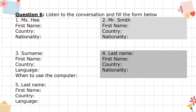Five. Good afternoon. Can I help you? Good afternoon. I'd like to join the tennis club. Certainly. What's your last name? White. Could you spell that for me? Yes, it's W-H-I-T-E. Thanks, Mr. White. And what's your first name? Marty — that's spelled M-A-R-T-I. Where are you from, Mr. White? France. So you speak French? Yes, that's right.